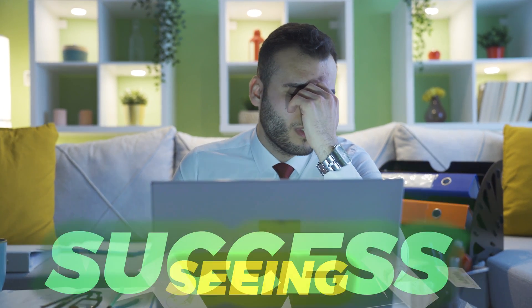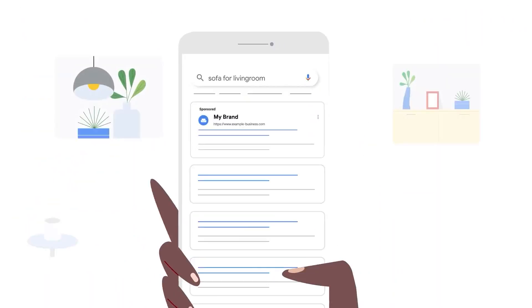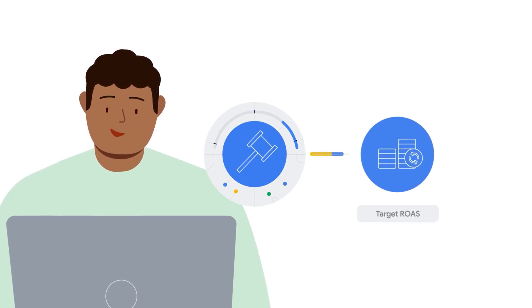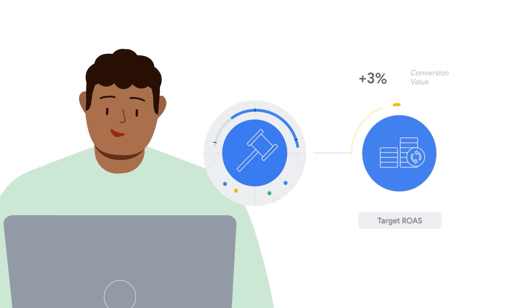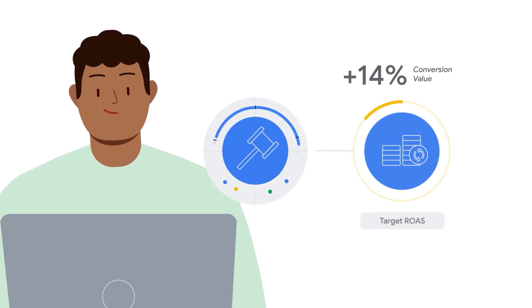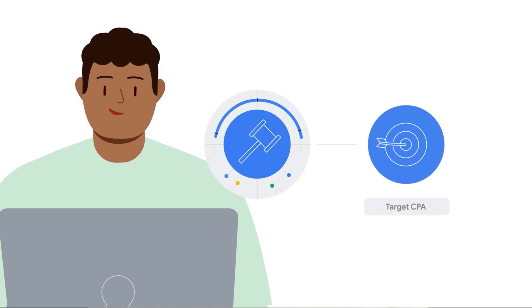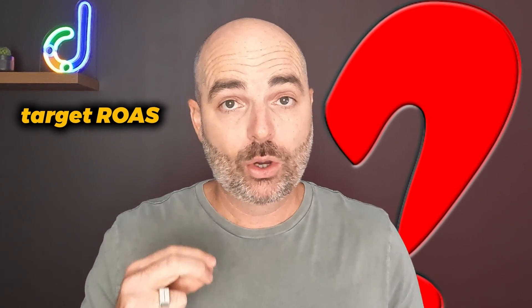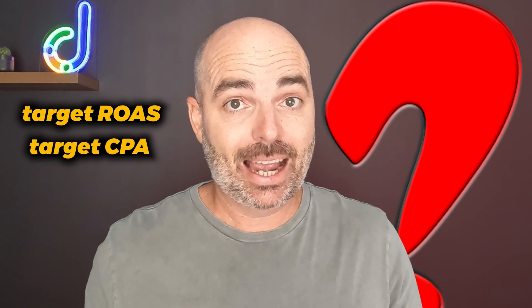If you're currently not seeing success with your Google Ads campaigns and you are using a target ROAS or a target CPA bidding strategy, the problem is highly likely to be that you have set your target ROAS or your target CPA the wrong way.